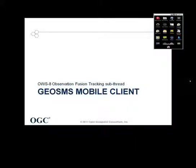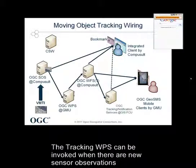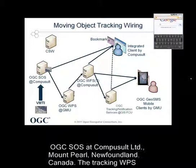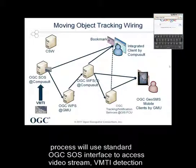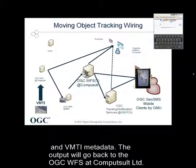This is the OGC GeoSMS mobile client developed at the Center for Special Information Science and System, George Mason University. GeoSMS is an open specification for sharing messages quickly through SMS messages or texting. It separates itself from regular messages with added information on geospatial locations.